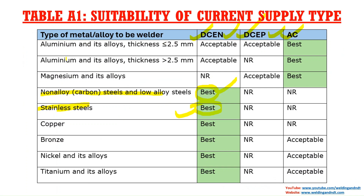For aluminium and its alloys, whether the thickness is less than or greater than 2.5 mm, the best current setting will be AC. For magnesium, AC also gives the best result. For carbon steel, stainless steel, copper, bronze, nickel, and titanium alloys, the best configuration is DCEN — direct current electrode negative.